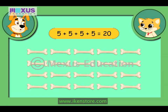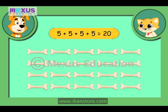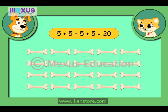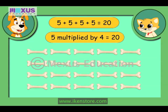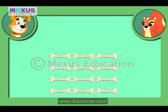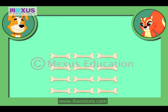Counting four groups of 5 bones each is like multiplying 5 by 4, or adding 5 to itself 4 times. So 5 multiplied by 4 is equal to 20. Amber, can you tell me how much is 3 multiplied by 4?